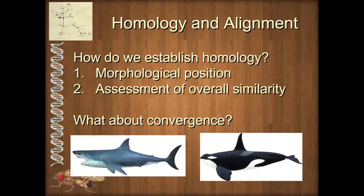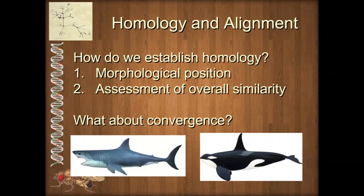We can establish homology in a number of ways. Number one, we can look at the morphological position of a feature. For forelimbs, there are distinctive ways they attach to the pectoral girdle, which attaches to the backbone — fairly clear positional data suggesting those forelimbs are homologous. We can also look at overall similarity: if things are very, very similar, especially a complex trait, that's a good indication they were derived from a common ancestor and are homologous. However, it's not 100%, because there's another major way we can have similarity that is not homologous — and that is convergence.